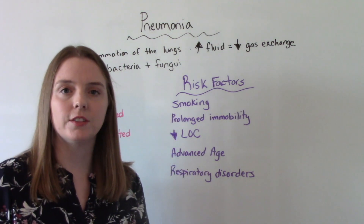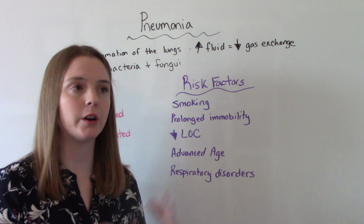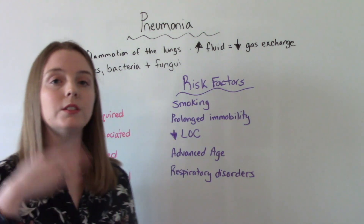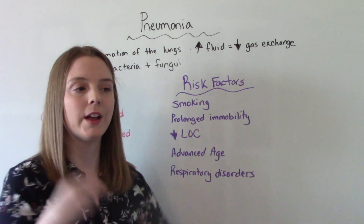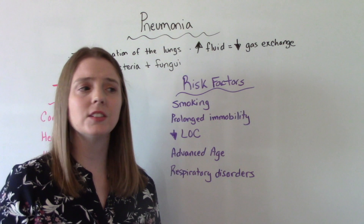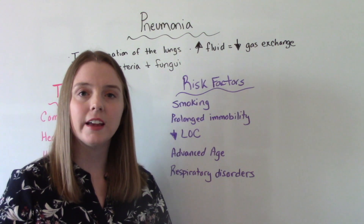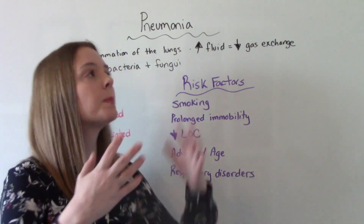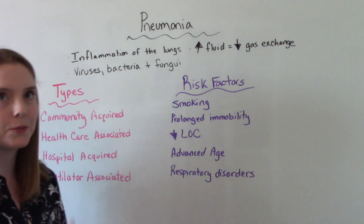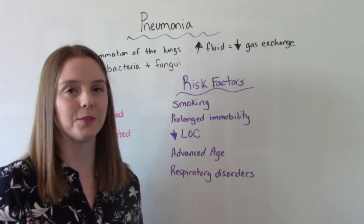Those who have a decreased level of consciousness — think about our coma patients, patients that are bed-bound or confused — are also at risk. Those with advanced age: your risk of acquiring pneumonia goes up as you get older, so a 90-year-old is at higher risk than an 80-year-old. Because of the normal physiological changes of aging, like decreased lung capacity and not being as strong taking those breaths, they have a higher risk. And then, of course, respiratory disorders — if you already have something like COPD, you are at higher risk for getting pneumonia.